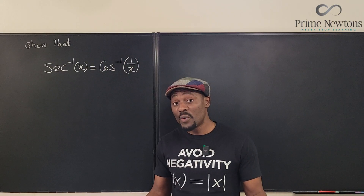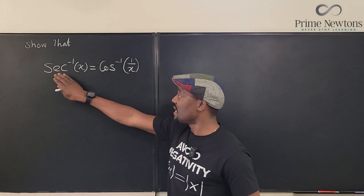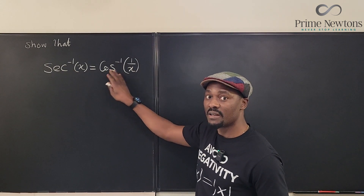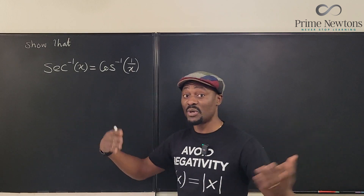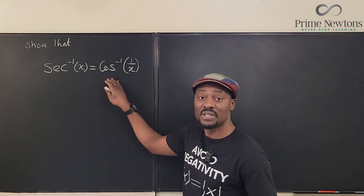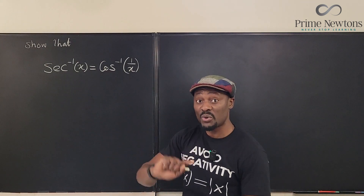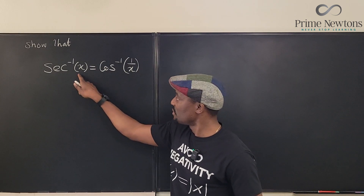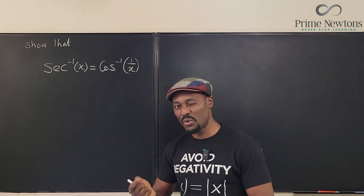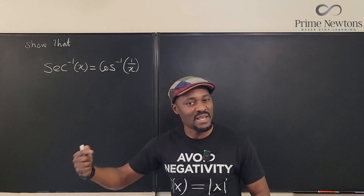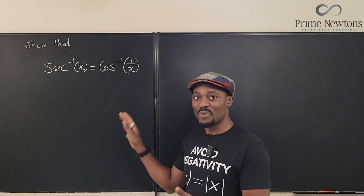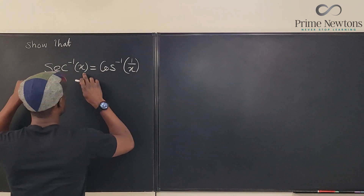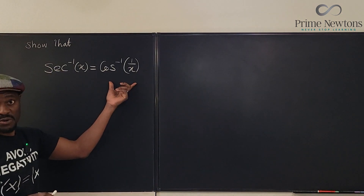Let's start with what we know. We want to show that the inverse secant of X is equal to the inverse cosine of 1 over X. Remember, the basic relationship between secant and cosine is that one is the reciprocal of the other. But what this equation says is that their respective arguments are reciprocals of each other. It tends to make sense, but if you don't know the tricks to follow, you might not be able to show it.